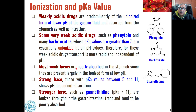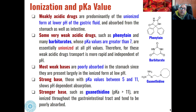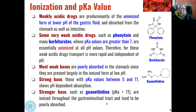Most weak bases are poorly absorbed in the stomach since they are largely in the ionized form at low pH. Strong bases where the pKa value is between 5 and 11 show pH-dependent absorption — at high pH they are absorbed more, and at low pH they are poorly absorbed. Strong bases such as guanethidine, where the pKa is greater than 11, are ionized throughout the gastrointestinal tract and are therefore poorly absorbed.